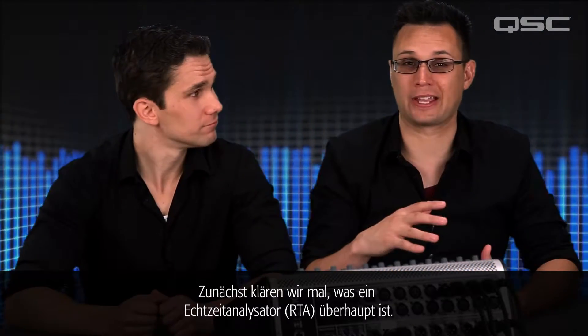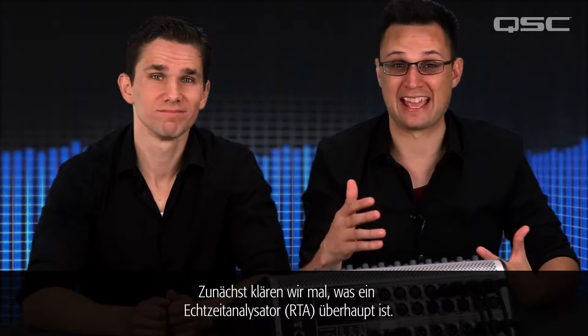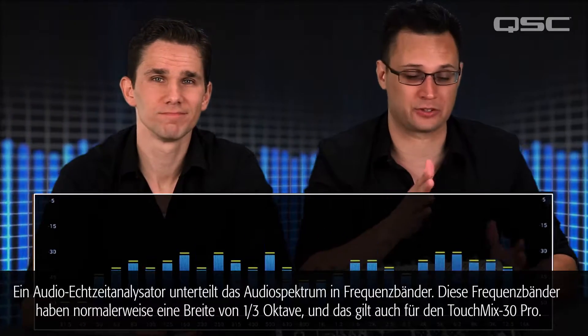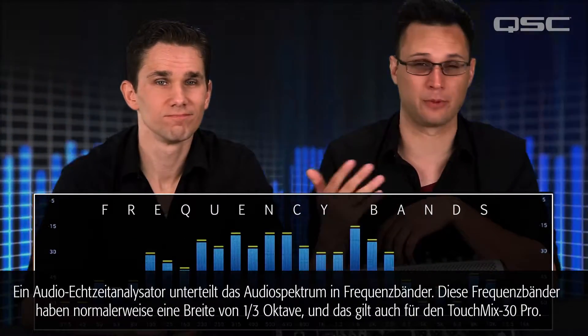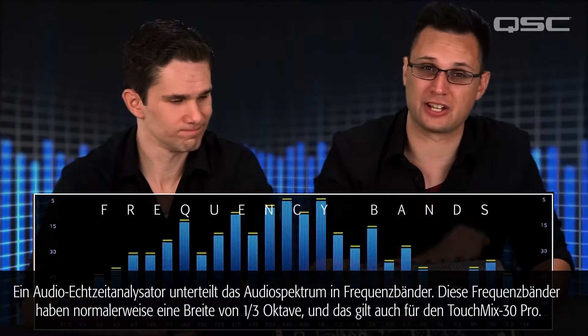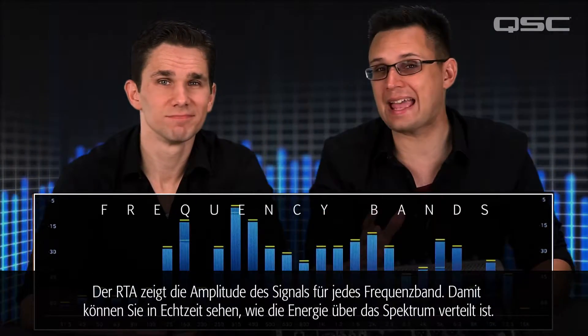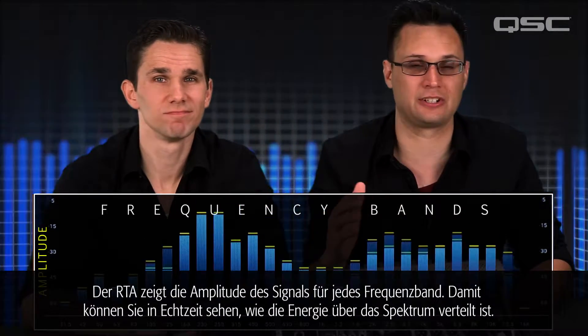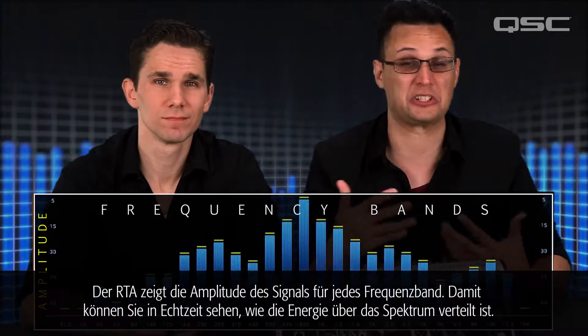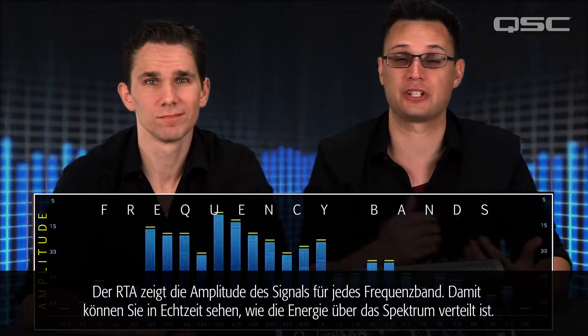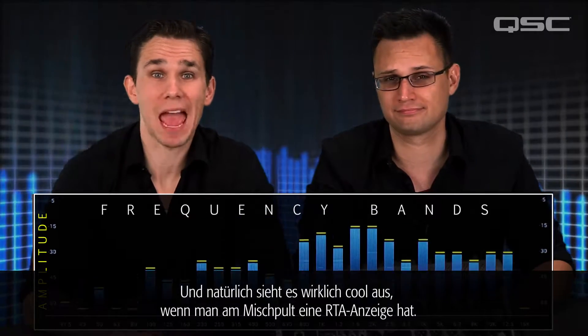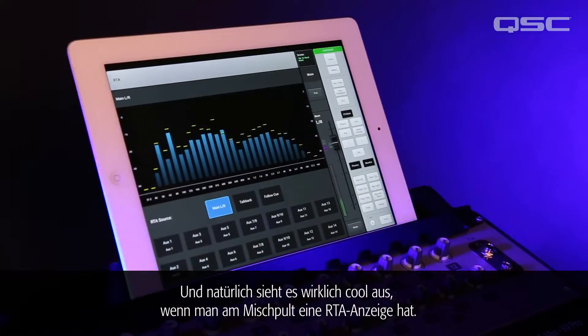In this video we're going to tell you about the TouchMix 30 Pro's real-time analyzers, how they work, and what you can do with them. An audio real-time analyzer breaks the audio spectrum into frequency bands. One-third octave bands are most typical and that's what you'll find in the TouchMix 30 Pro. The RTA displays the amplitude of the signal in each frequency band so you can see in real-time what the distribution of energy looks like. And of course having an RTA display looks really cool at the mix position.